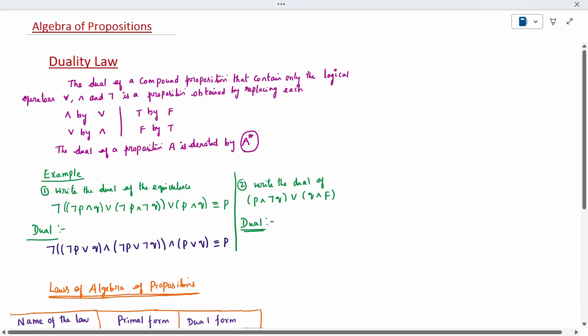Same way, one more. When I am able to write for this question, what is the dual? P as it is, instead of conjunction, disjunction, negation, q as it is. Instead of disjunction, conjunction, q as it is, disjunction. False means true. This is the duality law.